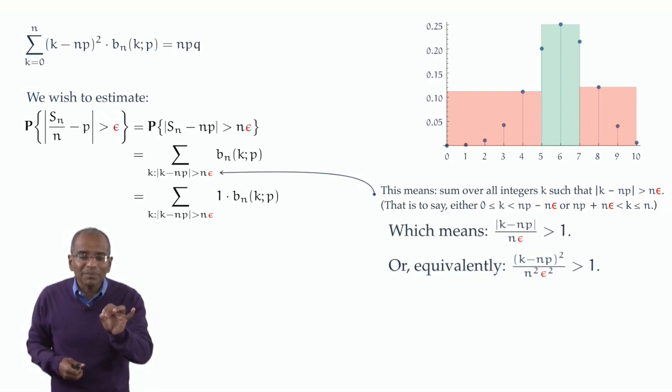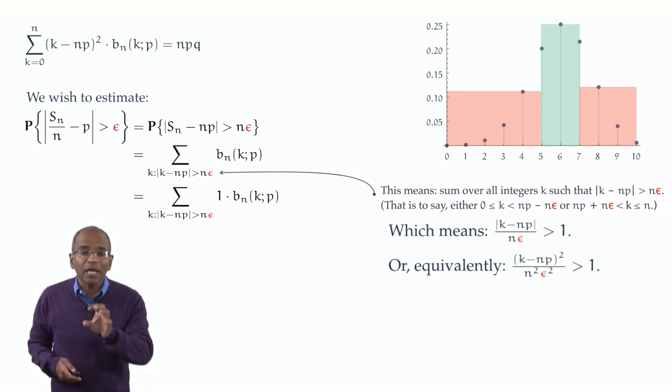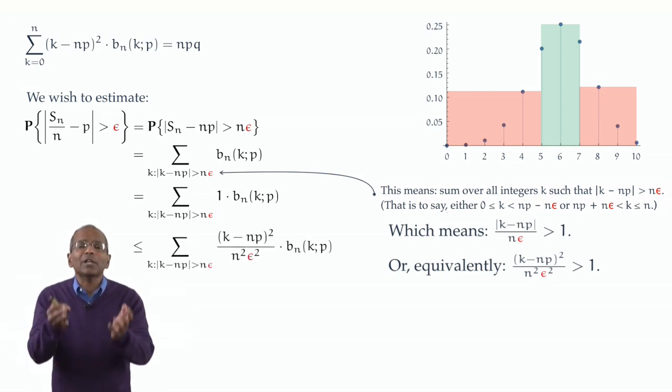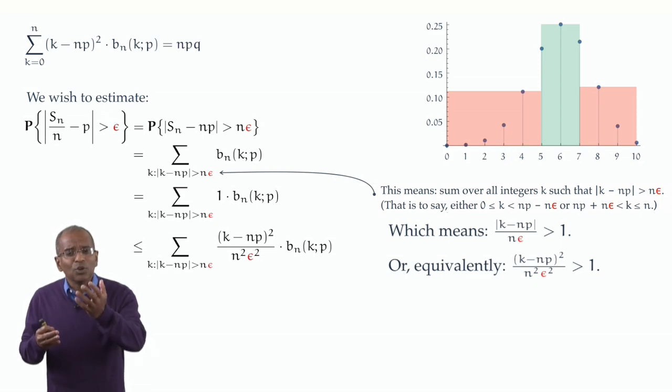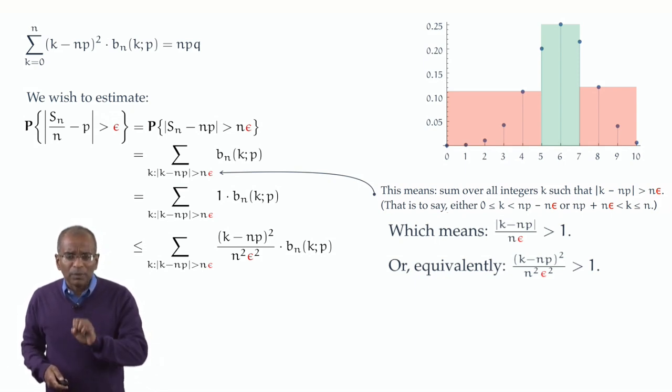Every term in that sum satisfies this inequality. If I replace 1 by k minus np, the whole squared, divided by n squared epsilon squared, for k in that range, then I can only increase the value of the sum. And your immediate reaction is, the man has gone stark staring bonkers. He started with a small expression and now he has made it bigger and worse. How is this in any way useful? Bear with me. We're going to make things a little worse before we make it better.